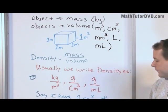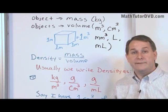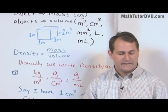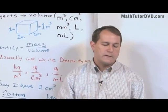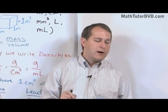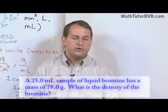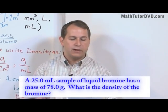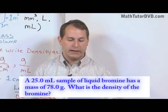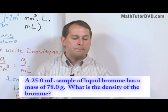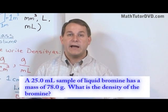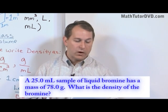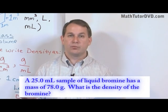What we're going to do now is work a few problems to give you a little bit of practice with density, because it's really not that hard. The first problem says a 25 milliliter sample of liquid bromine has a mass of 78 grams. What is the density of bromine?